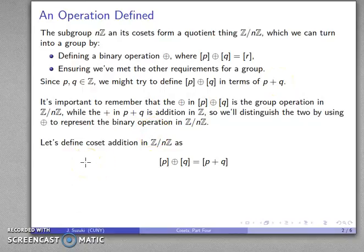So let's define our coset addition as follows. Take a coset, take a coset, circle plus them together. What you get is the coset that is represented by the sum of the representatives. And so we've defined our binary operation.